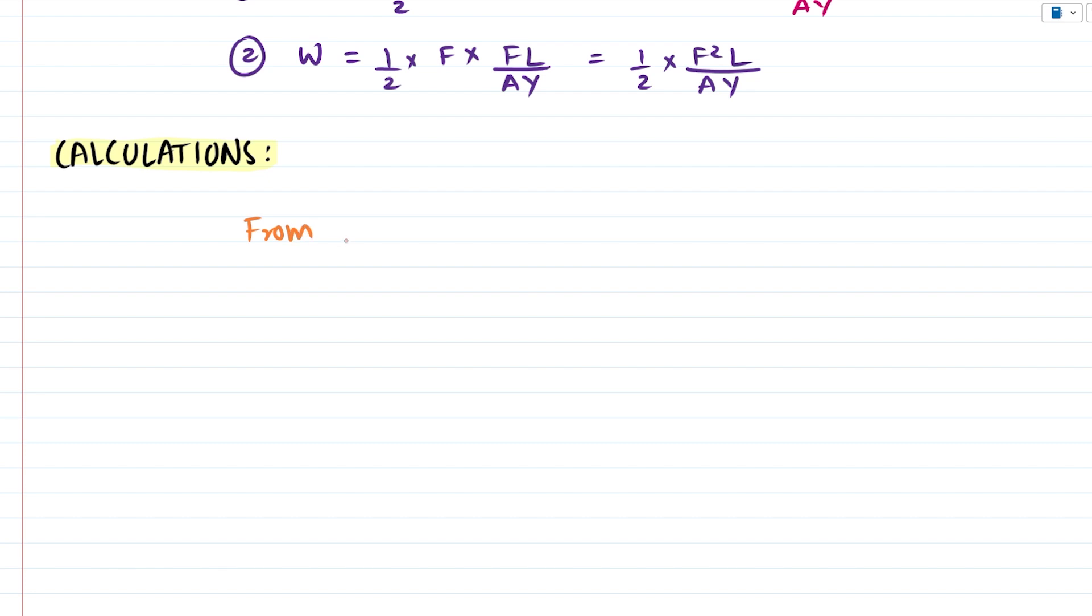So we will write in the calculation from formula number 2 that is the formula to calculate work done. So W is said to be ½ × 100² × 2 meters divided by the cross sectional area which is said to be 2.25 × 10⁻⁸ × the Young's modulus for steel whose value is 2 × 10¹¹. So what we have done is we have substituted the values for each of the entities.